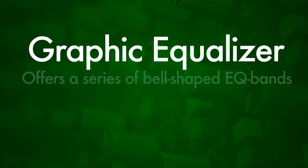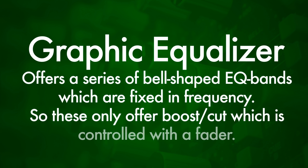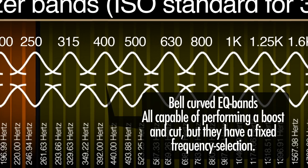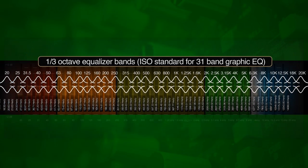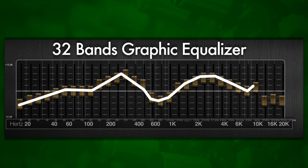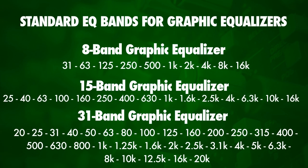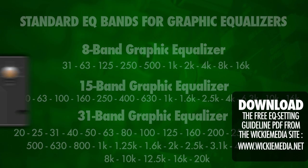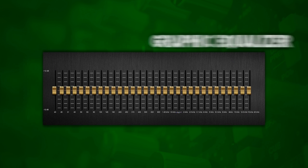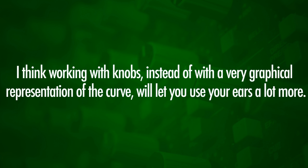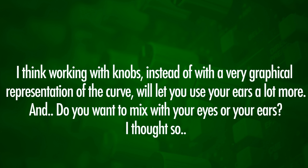Let's take a look at a graphic equalizer. A graphic equalizer offers a series of bell-curved EQs which are fixed in frequency — they only offer a gain parameter, normally controlled with a fader. When you set the frequencies, you can kind of visualize what the frequency curve looks like, hence the name graphic EQ. These frequency bands have been standardized in an ISO norm. A parametric EQ normally has lots of knobs; a graphic EQ has faders; and many software EQs use visual bands that show your EQ curve much better than hardware, though hardware makes you use your ears more.